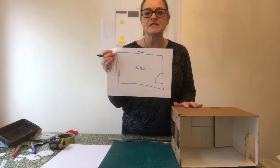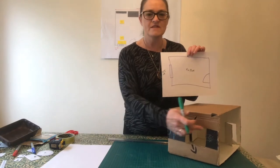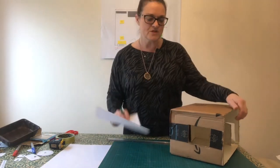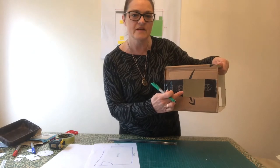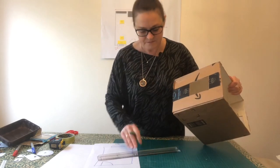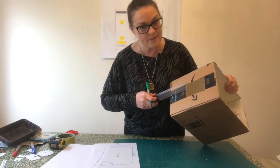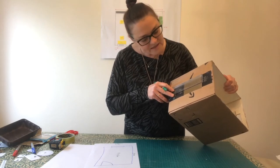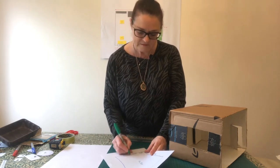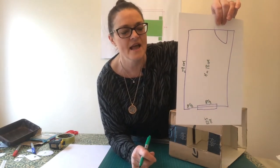The next thing we need to know is where the window is on this wall. I'm going to measure the gap from the end to the beginning of the window, and then measure the window itself. The gap is eight and a half centimetres, and then the window itself is eight and a half centimetres. Let's add those measurements in — eight and a half and eight and a half.